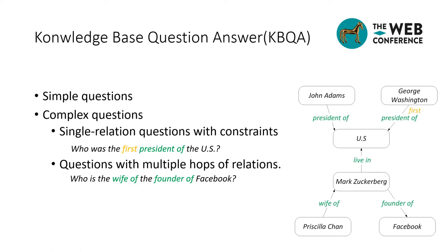For example, for the question 'Who is the wife of the founder of Facebook,' the answer is related to Facebook through two hops of relations, namely 'wife of' and 'founder of.' The picture shows a knowledge base fragment where the nodes are entities and the edges are relations labeled with their types.